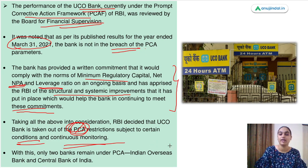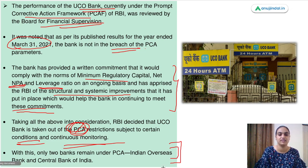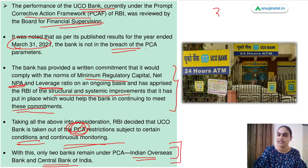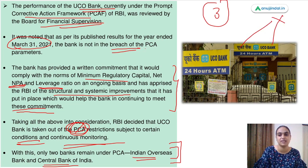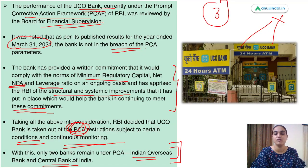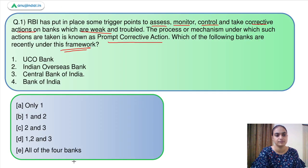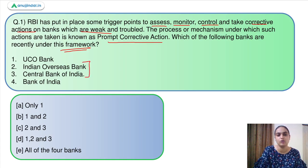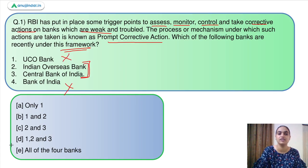Currently only two banks are under this framework: Indian Overseas Bank and Central Bank of India. Previously there were three banks — Indian Overseas Bank, Central Bank of India, and UCO Bank — but since UCO Bank is now out of this framework, only Indian Overseas Bank and Central Bank of India remain under it. Moving back to the question, we had to identify which banks are under this framework recently. As per the latest decision, only these two banks are there, so the answer is option C.